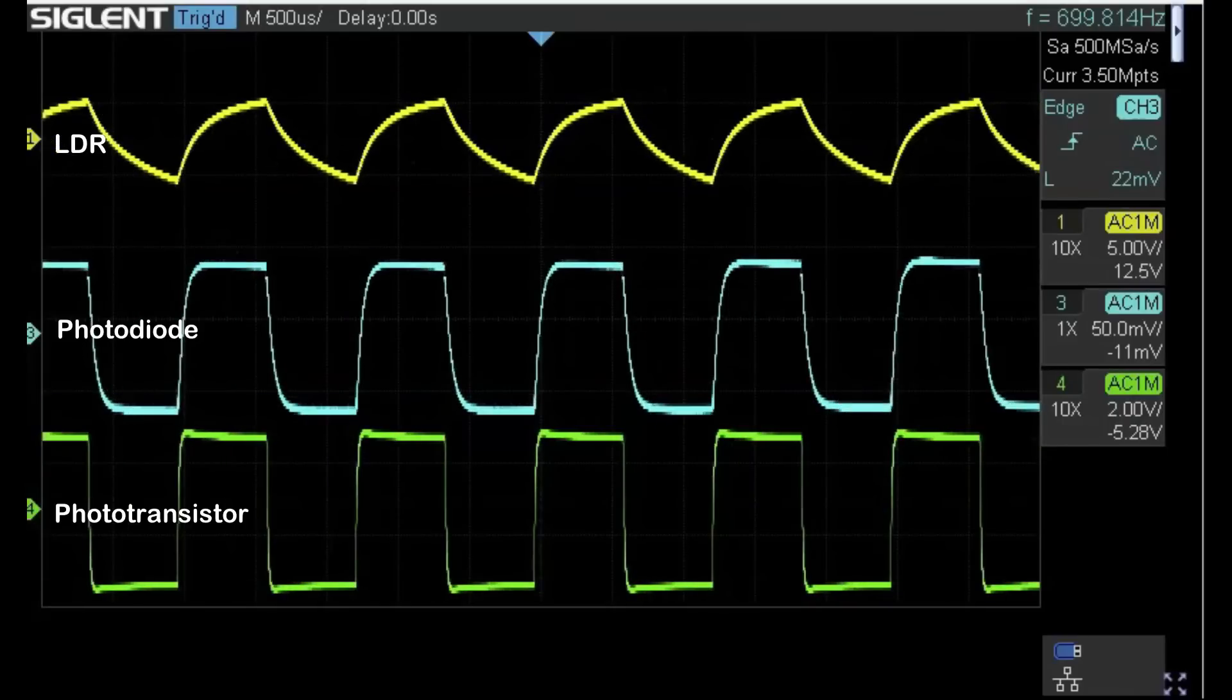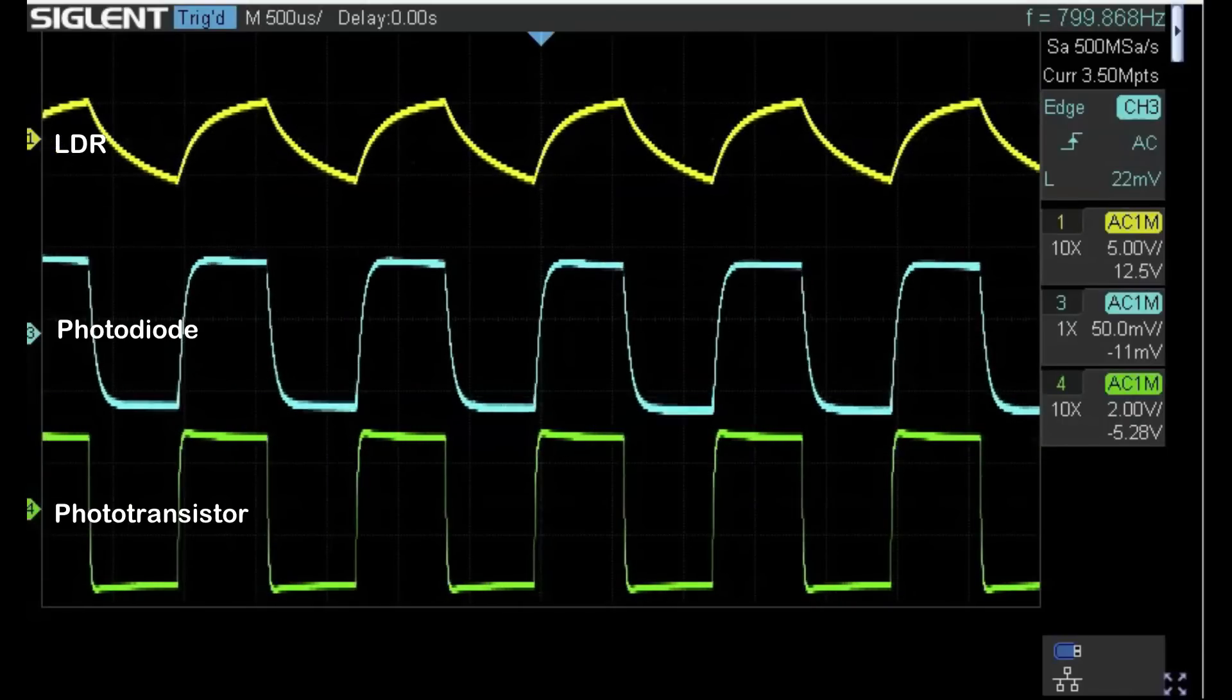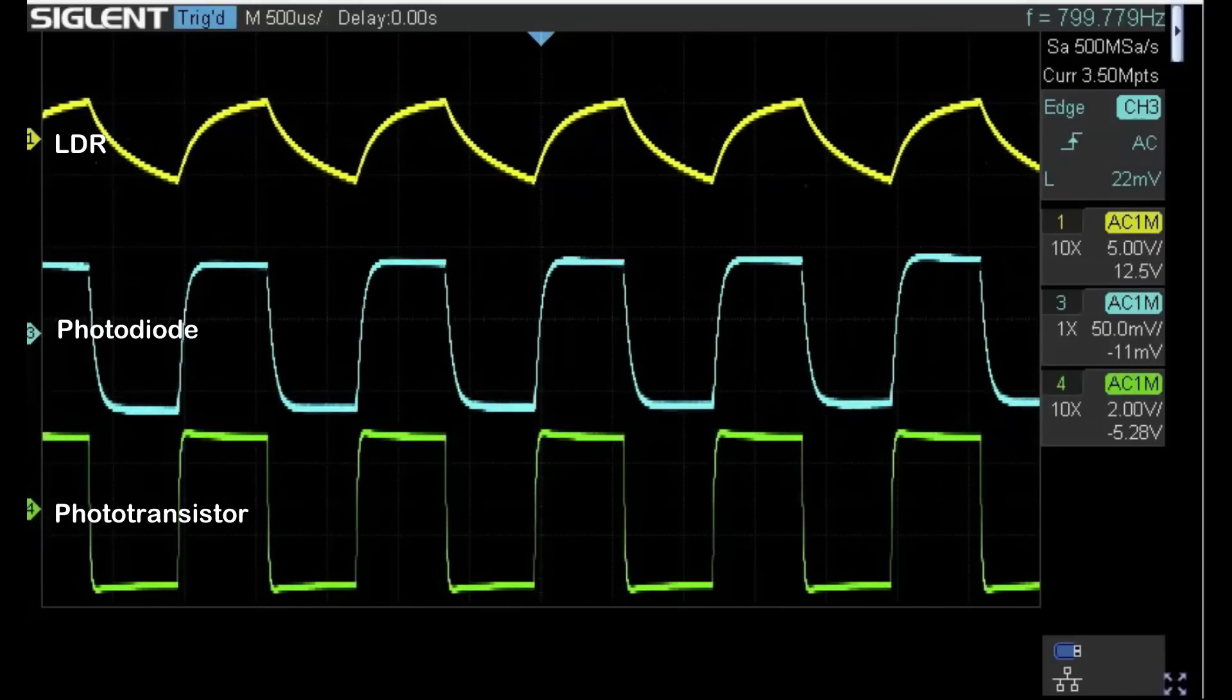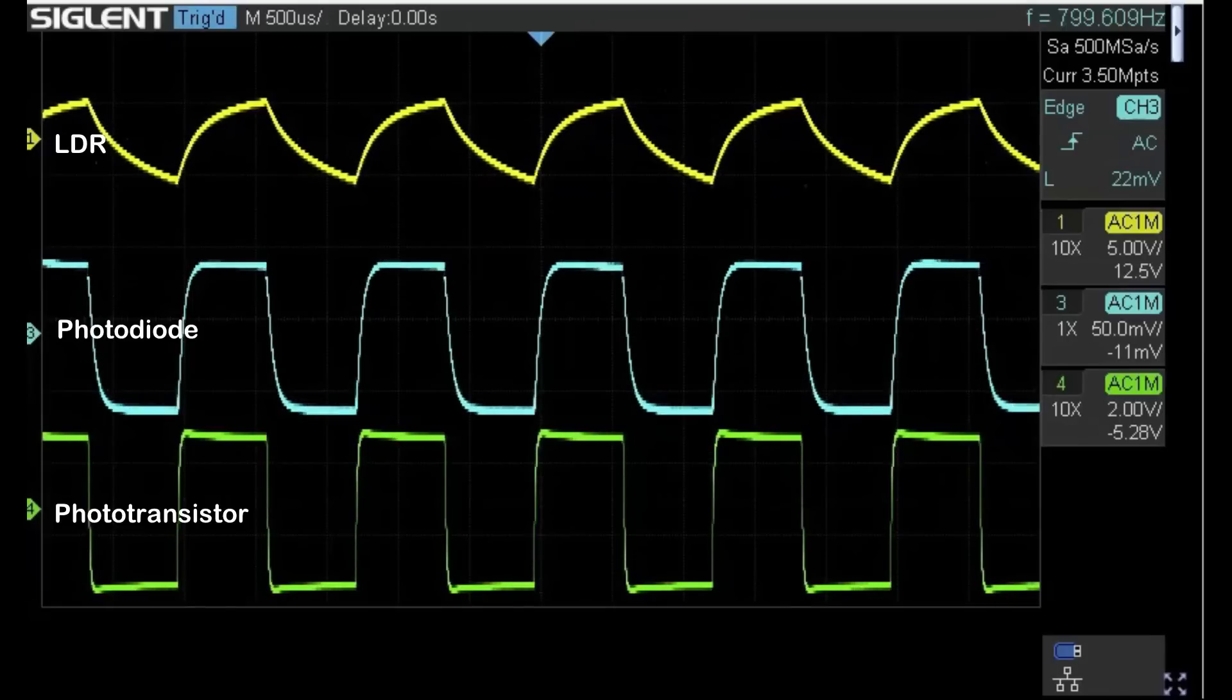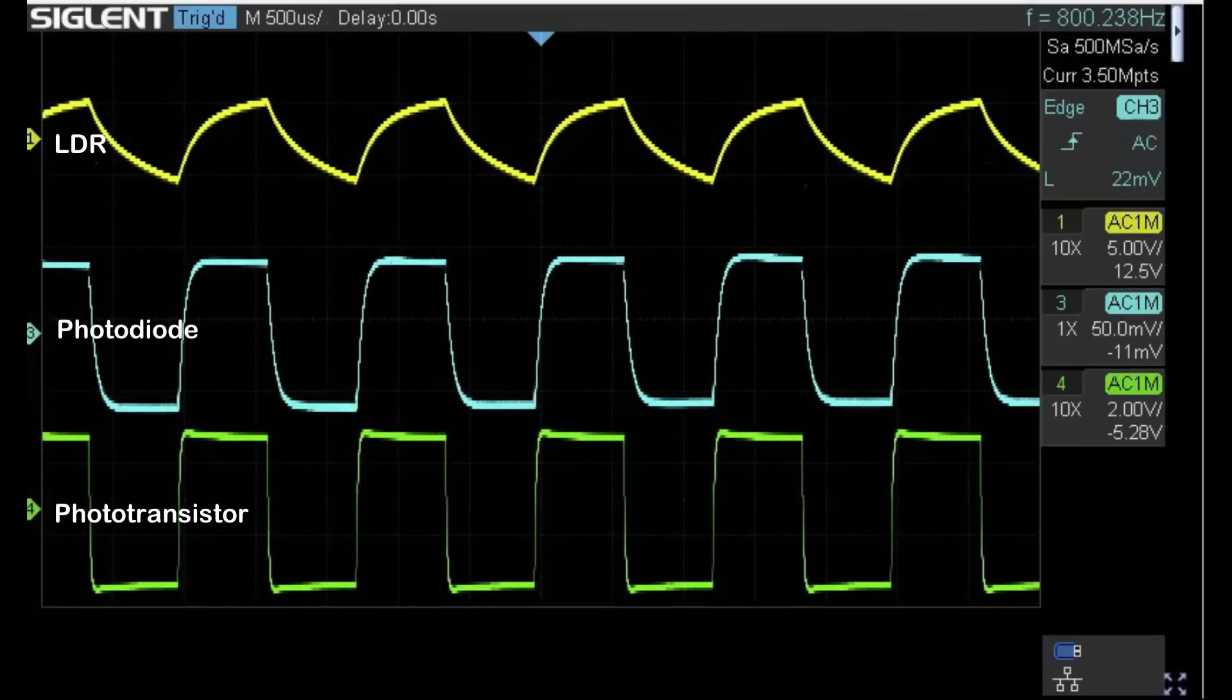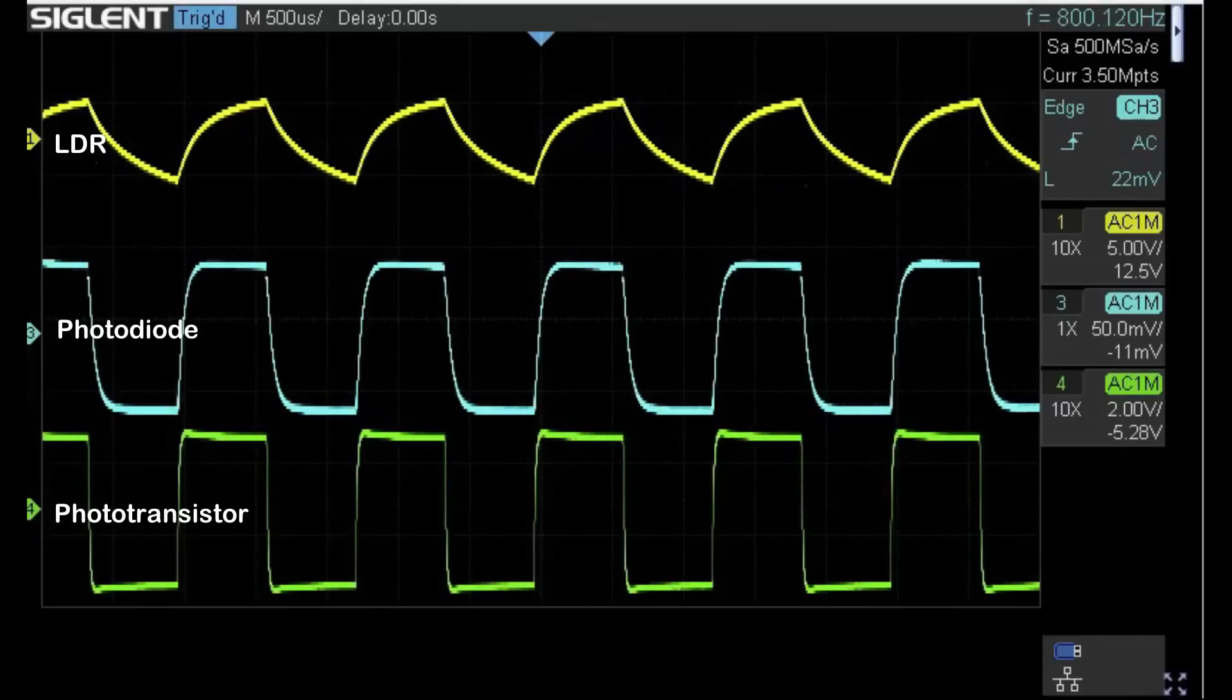Let's go up to 800 hertz. You can see a real degradation now in the light dependent resistor, but the other two are still producing reasonably good traces. I think the LDR has given quite a good account of itself really. We're at 800 hertz and it's still managed to recognize the changes.